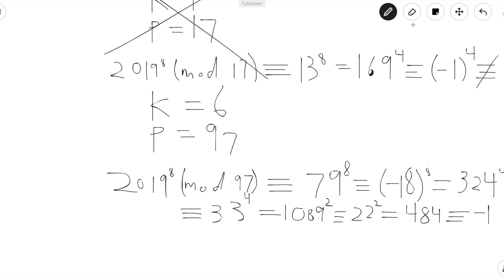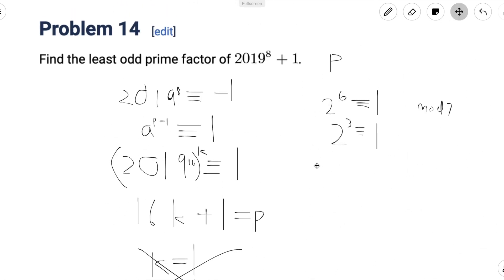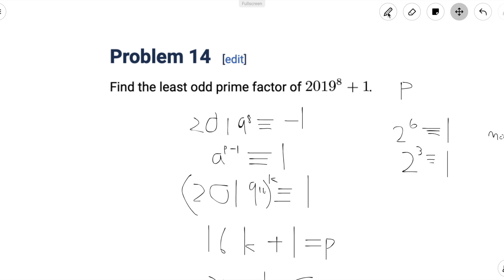And we've also shown by the above work that no primes below it work. So that means p must be equal to 97. And we're done.